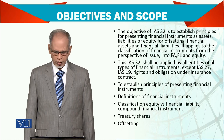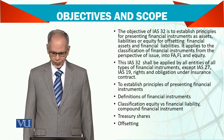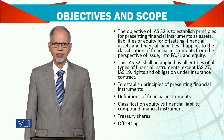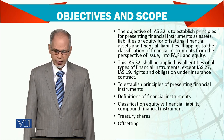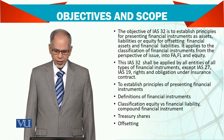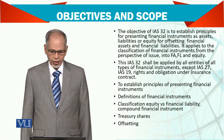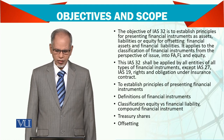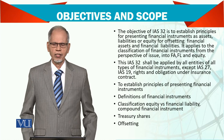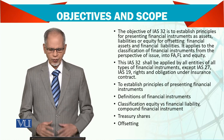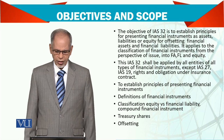IAS 32 shall be applied by all entities for all types of financial instruments, except IAS 27, which is regarding consolidation, and IAS 19, which is a different standard. Rights and obligations under insurance contracts are also excluded. The topics covered include: establishing the principle of presenting financial instruments, the definition of financial instruments, classification of equity versus financial liability, compound financial instruments — which is an instrument where you have two things together, liabilities as well as equity — then treasury stocks, trading shares, and offsetting.